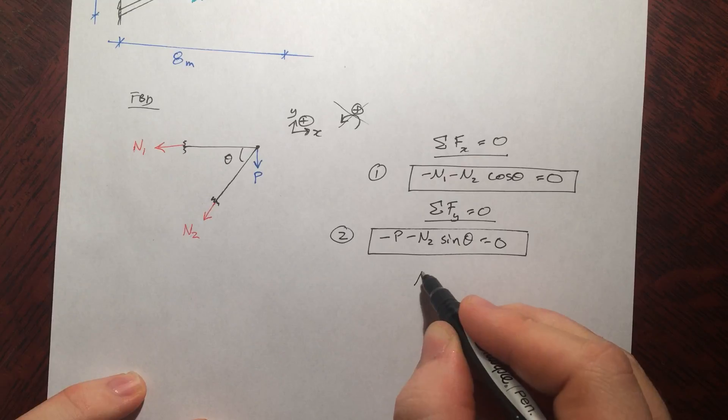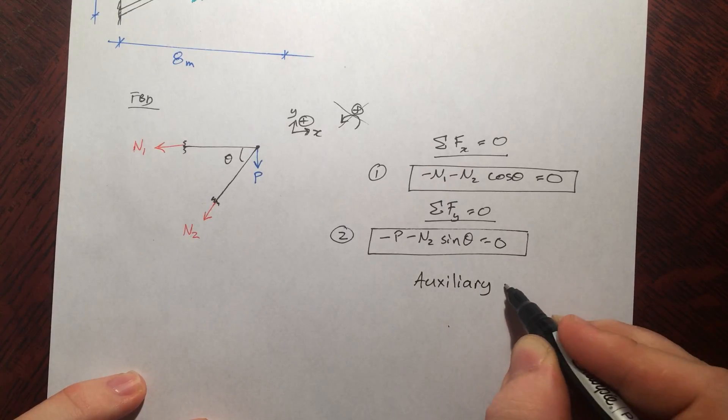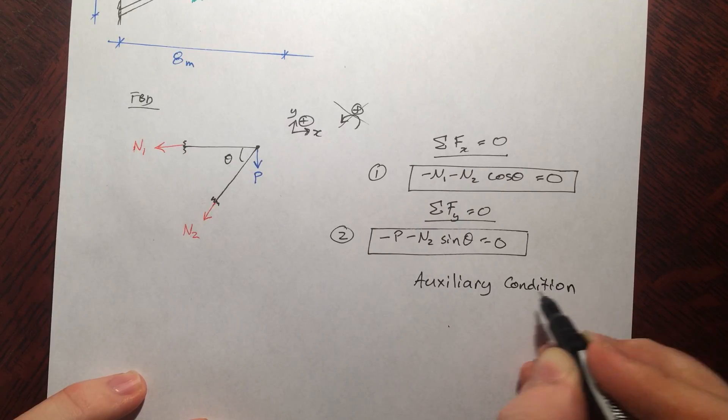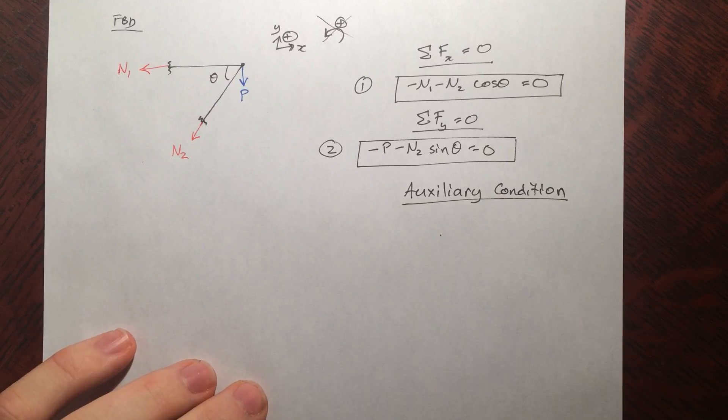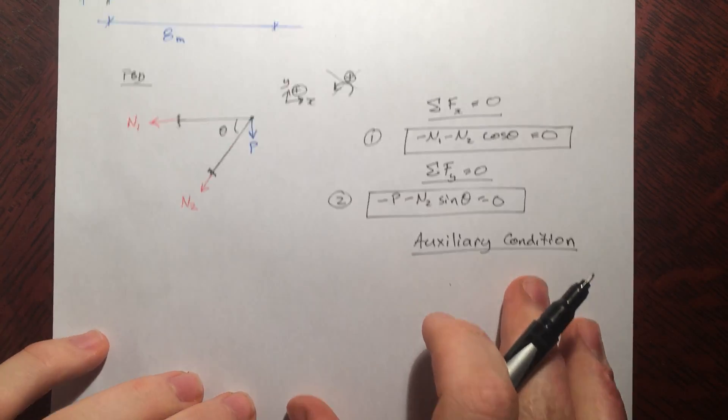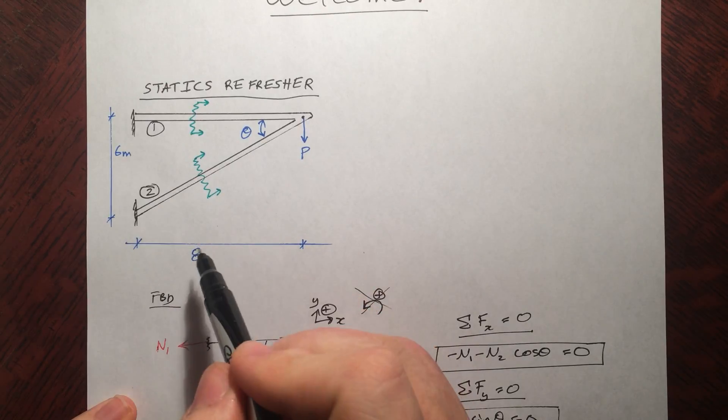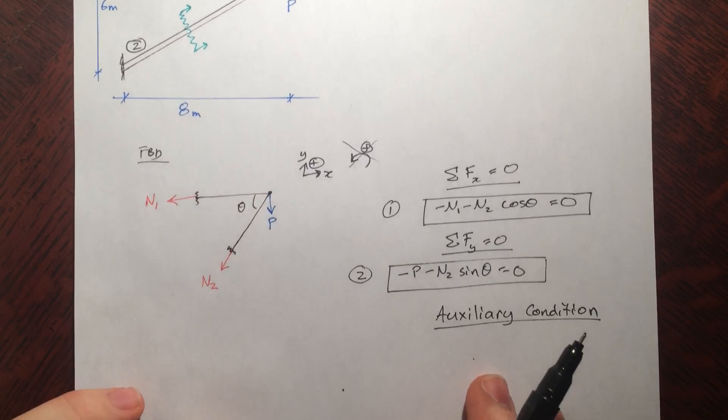Alright. So in this case, you can probably figure out it pretty quickly, but in some cases, what I like to call an auxiliary condition is a lot harder to figure out. So I make a separate heading. This is all part of the process that I've came to develop for myself. Alright. And we can just see here, this is a 6, 8, 10 triangle. Kind of just like the sister of the 3, 4, 5 triangle.